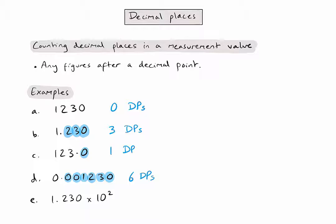For the fifth and final example, we've got a number written in scientific notation. Before counting the number of figures after the decimal point, we need to write this number out fully.